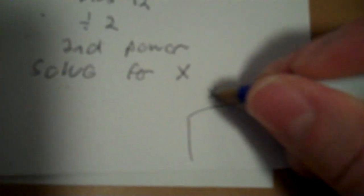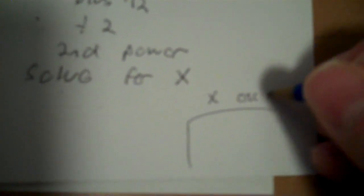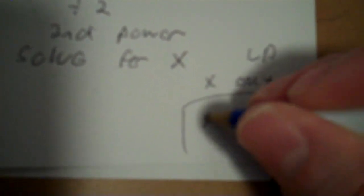And now you solve for x. You've got x only, and you'd apply linear properties. You've got times 5 plus 4, so you'd subtract 4 from both sides — that would be 5. 5 times x equals 5. Then divide by 5, and x equals 1.